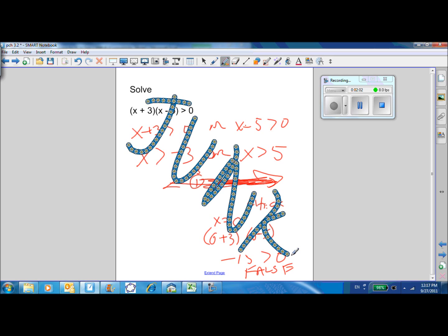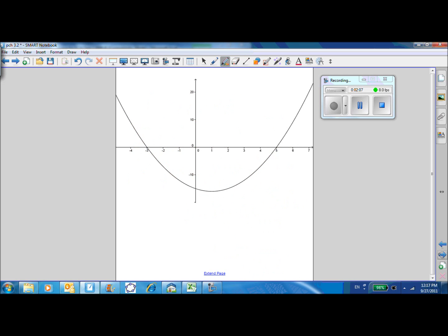Why did I bring up the zero product property? Because there is a way to use it to find out the zeros and then find out what's going on between them. So now let's see how we can do it in terms of a graph.